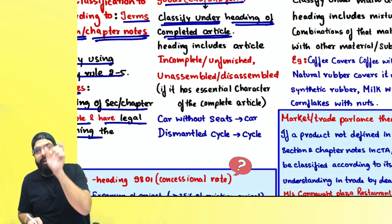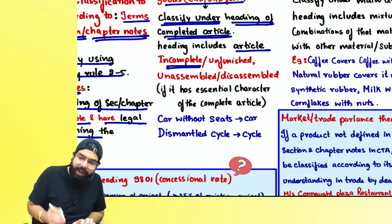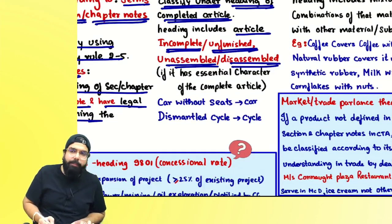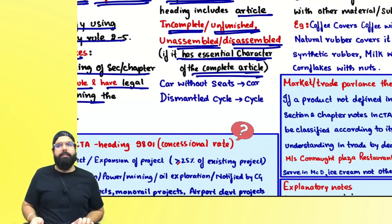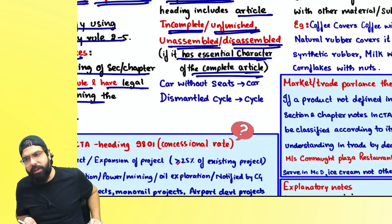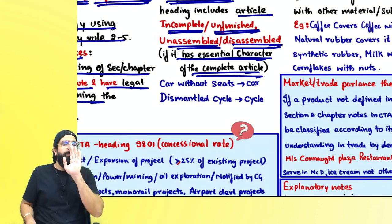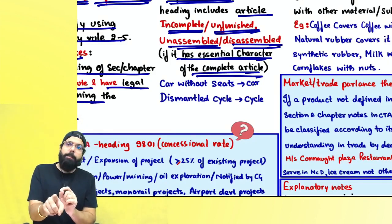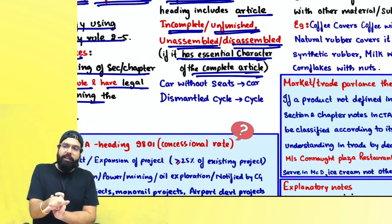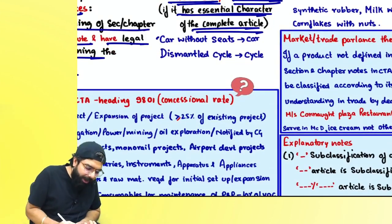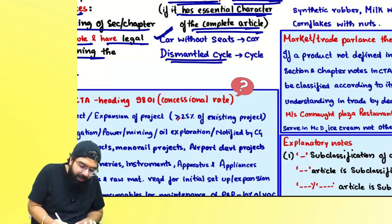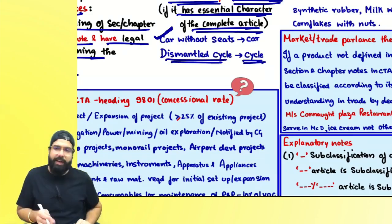Rule 2A says that a heading for a complete article always includes that article even if it is incomplete, unfinished, unassembled or disassembled — the only condition is it should have the essential characteristic of the complete article. For example, a car without a seat is still a car because it has the essential characteristics of a car. A dismantled cycle will always have the essential characteristics of a cycle, hence to be classified as a cycle.